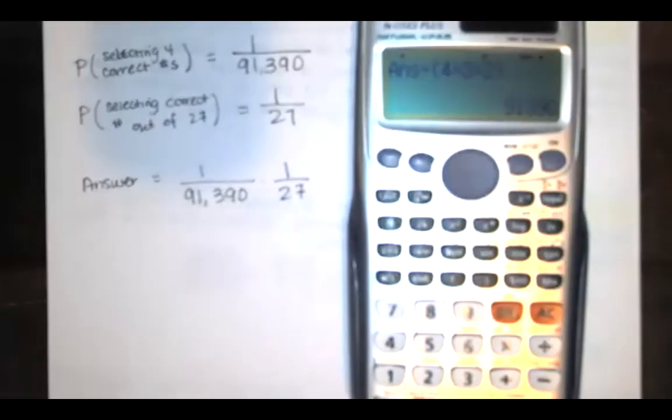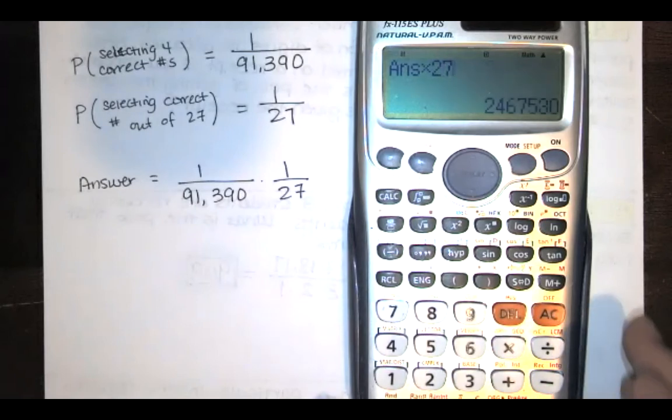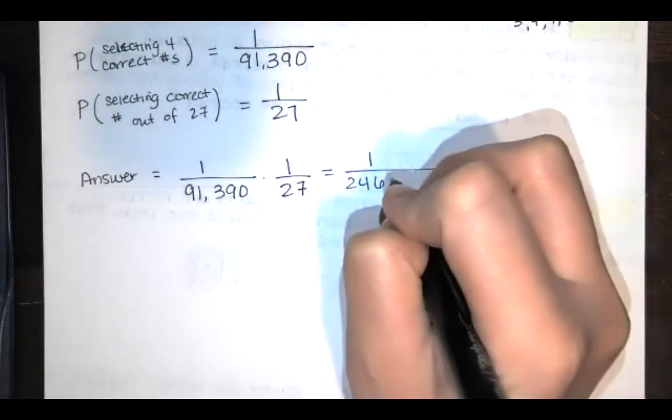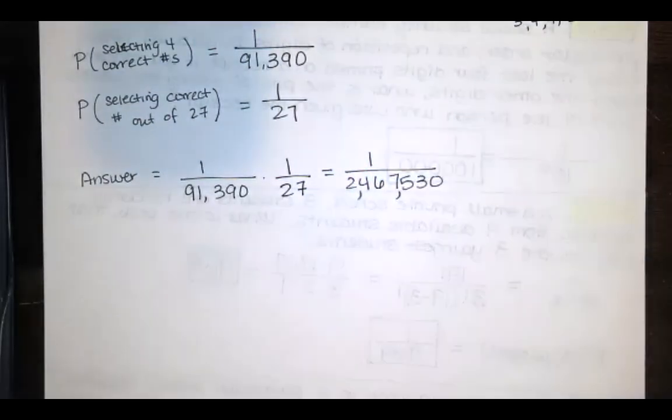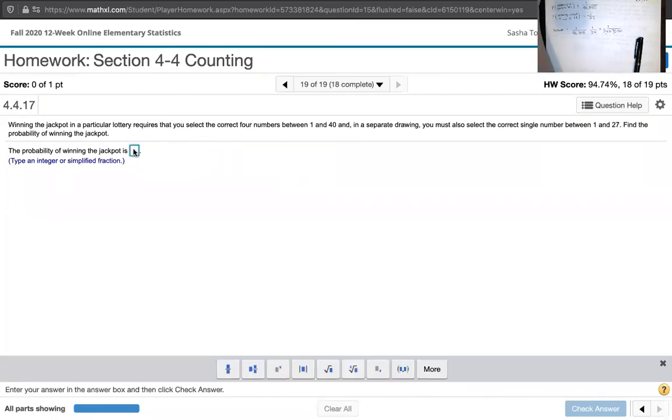And when we multiply those guys together, we'll take this and multiply by 27 and we get that huge denominator. So I've got 1 in 2,467,530. Now let's go back here. So I want 1 in 2,467,530. So if you happen to guess those, it looks like you must be pretty lucky.